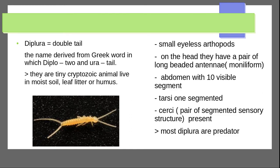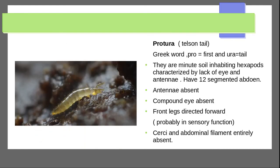Diplura have a small eyelash-like structure on the head, a pair of long beaded moniliform antennae, and an abdomen with ten visible segments. The tarsi are one-segmented and cerci are present as a pair of sensory structures. Most types of Diplura are predators.